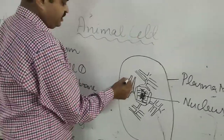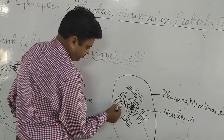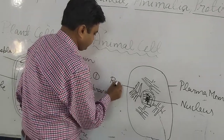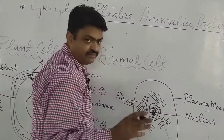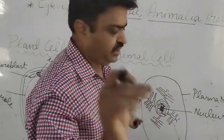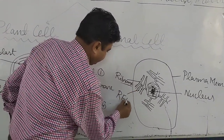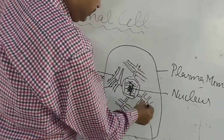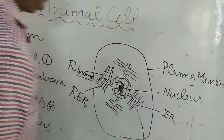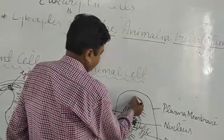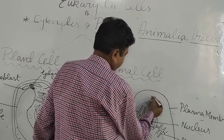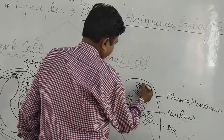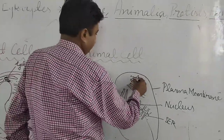Endoplasmic reticulum have two types. If they have granule-like structures called ribosomes on them, they are known as rough endoplasmic reticulum (RER). If they don't have these granules, they are known as smooth endoplasmic reticulum (SER). Around the endoplasmic reticulum, there are parallel vesicles called Golgi body, discovered by Camilo Golgi. Their main function is packaging.